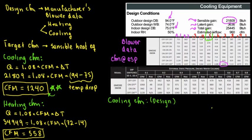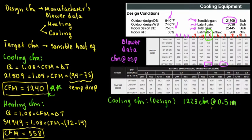At 0.5 inches of static pressure, it complies with our target CFM. So the design CFM is 1,223 CFM at 0.5 inches of water column (or water gauge). Now, when we talk about an air handler or furnace, we need to consider all components contributing to resistance.